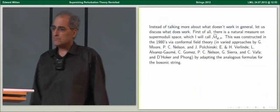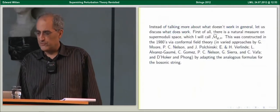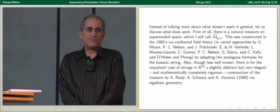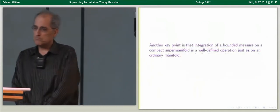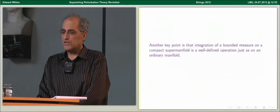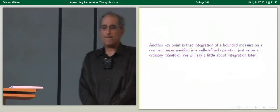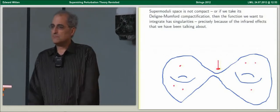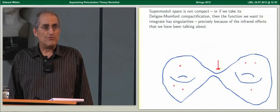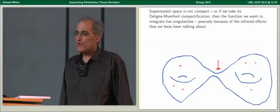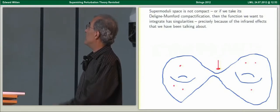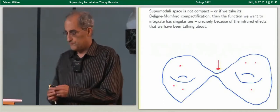Instead of talking about what doesn't work in general, let's discuss what does work. First of all, there's a natural measure on supermoduli space, and it was constructed in a variety of ways in the 80s. Another key point is that integration of a bounded measure on a compact supermanifold is a well-defined operation, just as on an ordinary manifold. That fact is a fundamental piece of the story, but it's not the whole story because supermoduli space is not compact, and if we take its compactification, the measure we want to integrate has singularities, precisely because of the infrared effects that we're trying to understand.